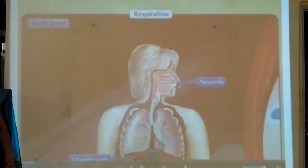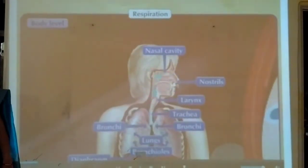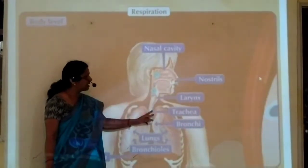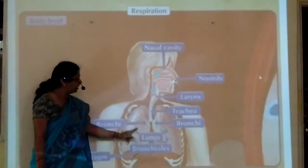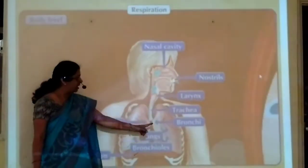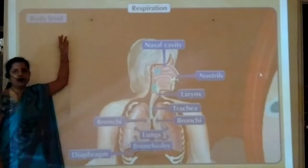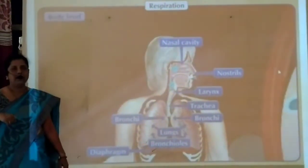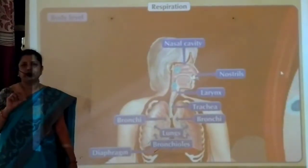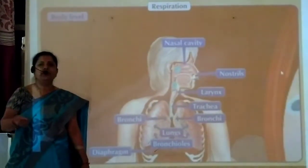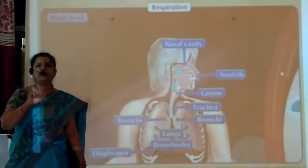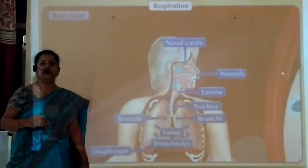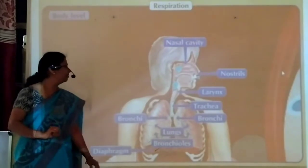The respiratory system includes nostrils, nasal cavity, larynx, trachea, and bronchi, and the main important respiratory organs are the lungs. At the body level, inhalation and exhalation of gases take place — oxygen is inhaled. We do not inhale pure oxygen; we inhale air, but only oxygen from that air is absorbed into the blood, which then carries it to different parts of the body, each and every cell.